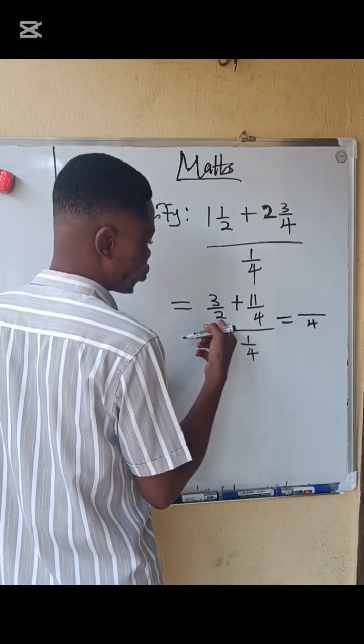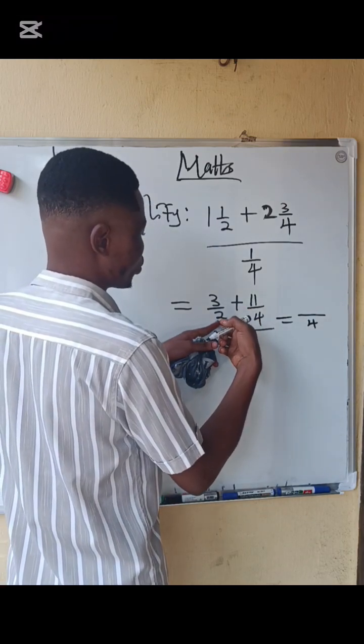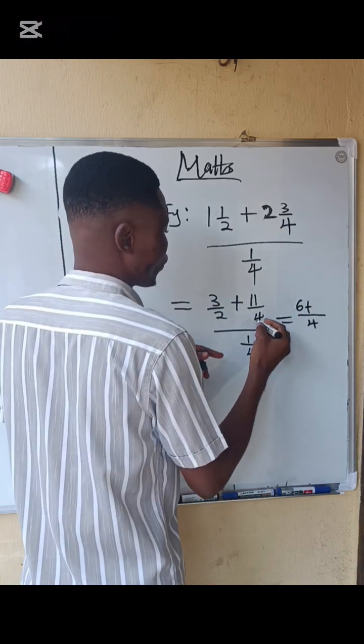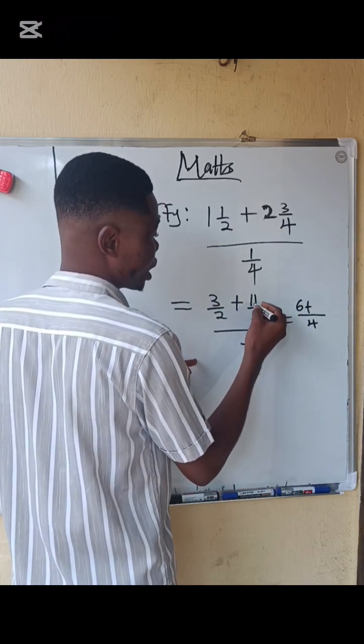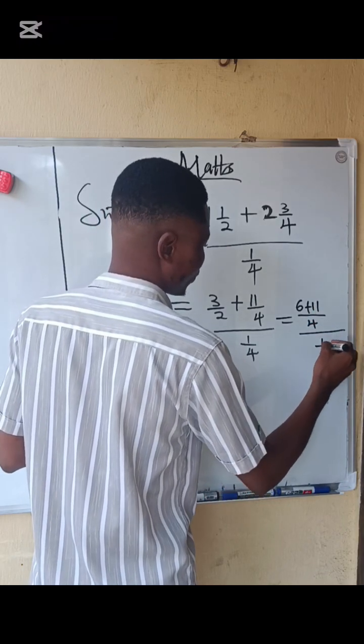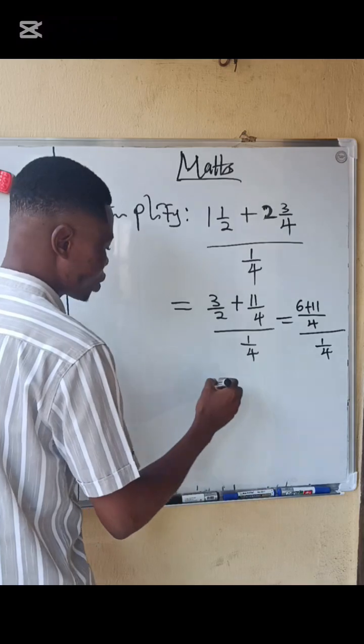4 divided by 2, that will give you 2. 2 times 3, that is 6. Plus 4 divided by 4, that is 1. 1 times 11, and it's still 11. So divided by what? 1 over 4. This equals to, add this, 6 plus 11, that is going to give you 17 over 4.